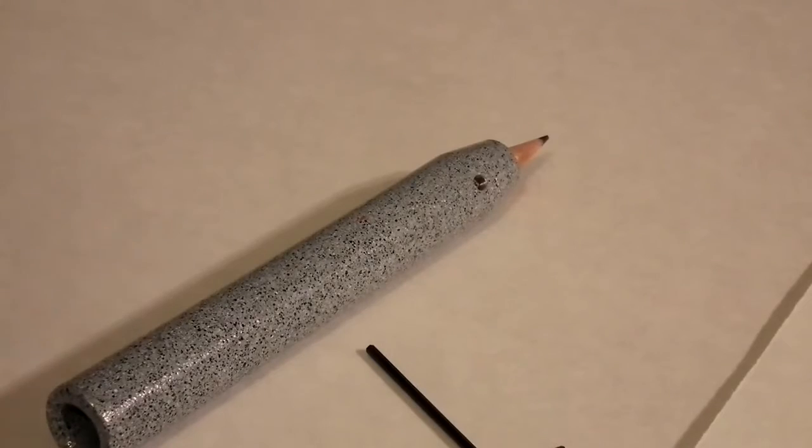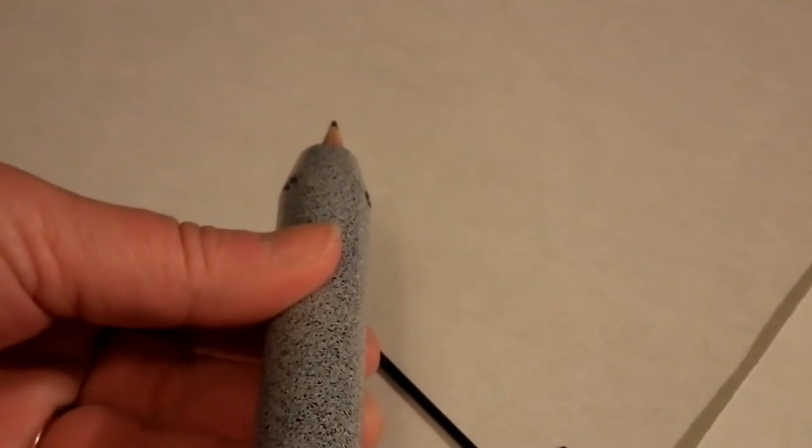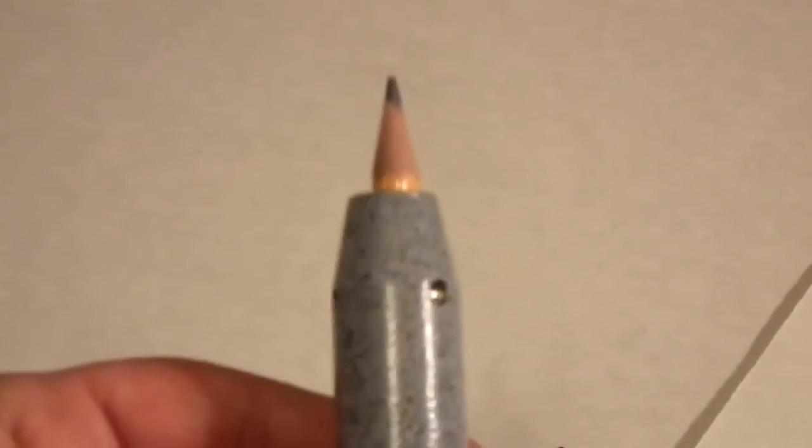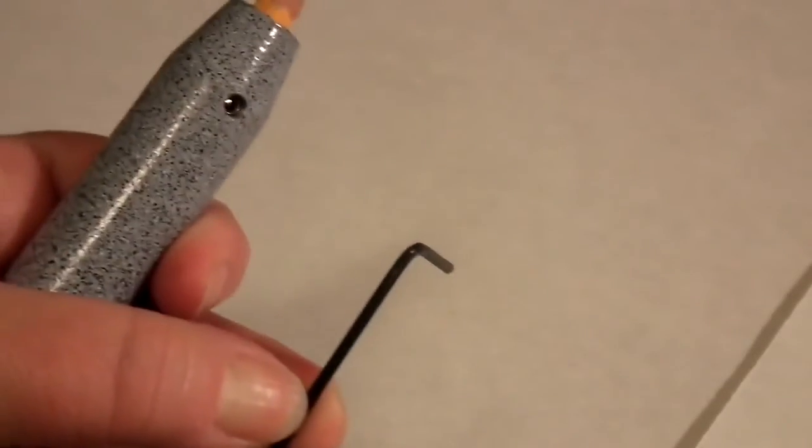These pencil covers are actually designed and marketed for individuals with poor muscle control. It's made of a hard ceramic or granite type material and it comes with three screws and an Allen wrench for attaching it to the pencil.